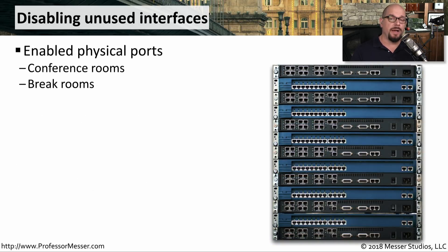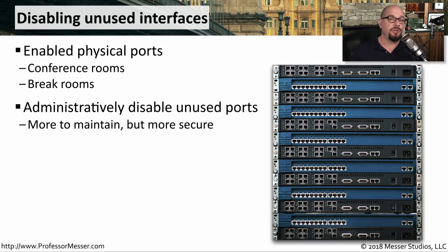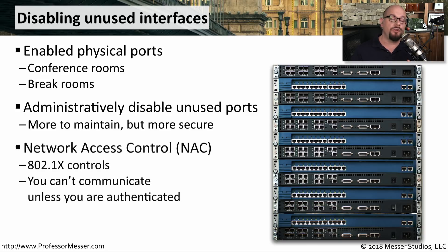If you're managing a large number of switches or routers, one thing you can do to prevent unauthorized access is to disable any interfaces that aren't currently in use. If you have conference rooms or break rooms that don't need access to the switch, it's a good best practice to disable them and prevent anyone from walking in and gaining access to your network. You may have to do some research to determine which interfaces should be enabled and which should be disabled, and there will be additional administration as devices are added or removed. You could also take advantage of network access control — 802.1x — which requires authentication from a user before they ever gain access to any interfaces on your switch.